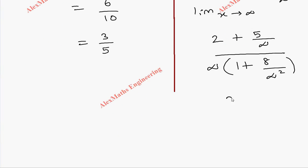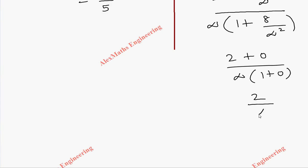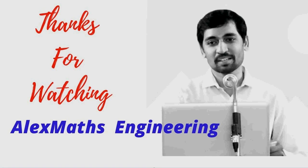So 2 plus 0 whole divided by infinity into 1 plus 0. So totally we are left with 2 by infinity. Anything divided by infinity is 0. So the answer is 0.